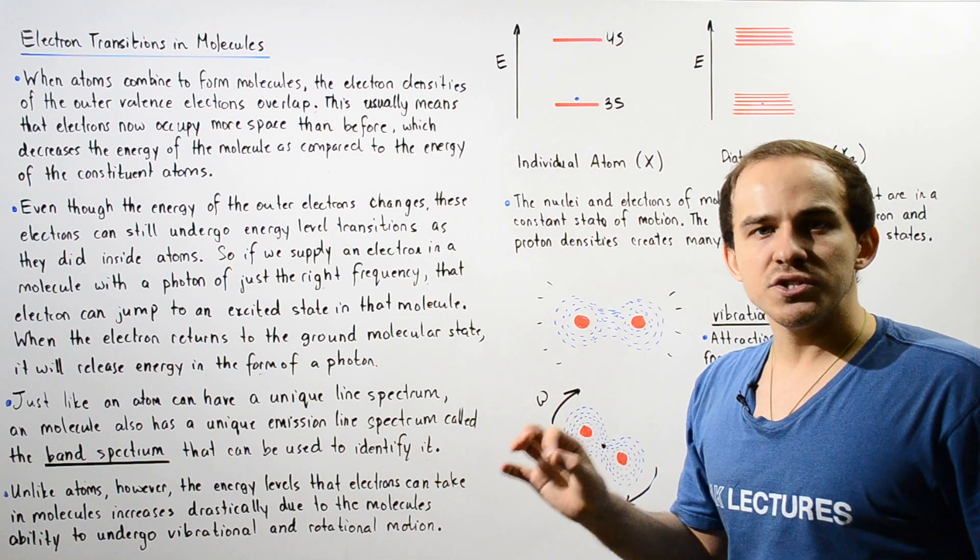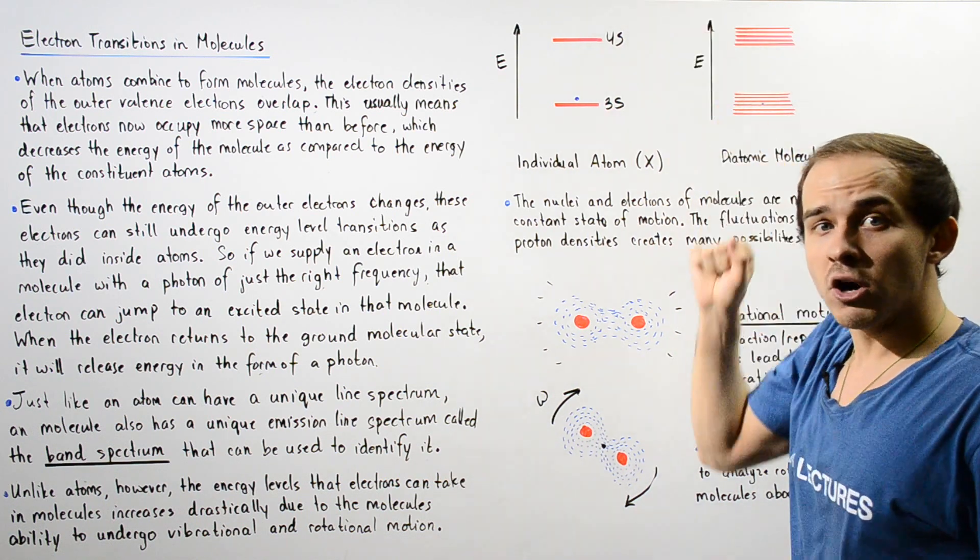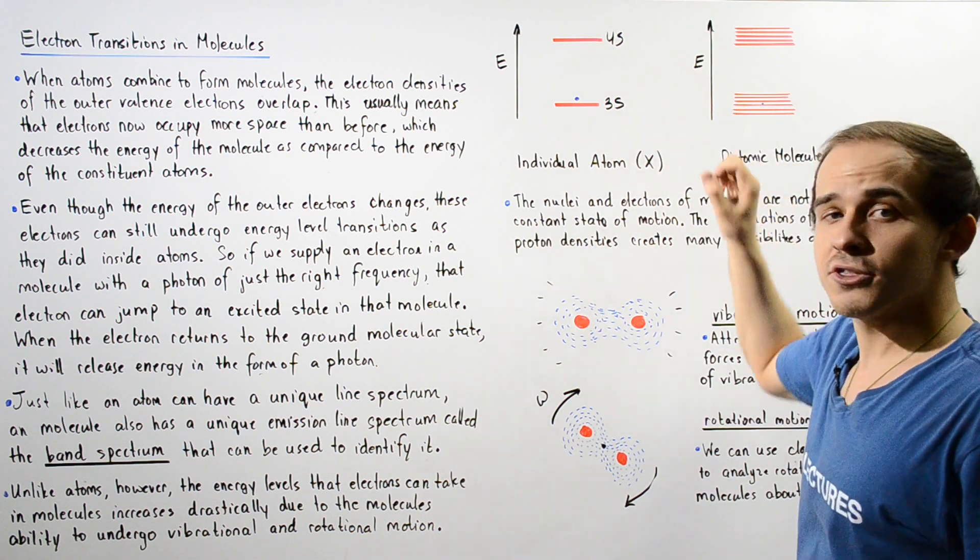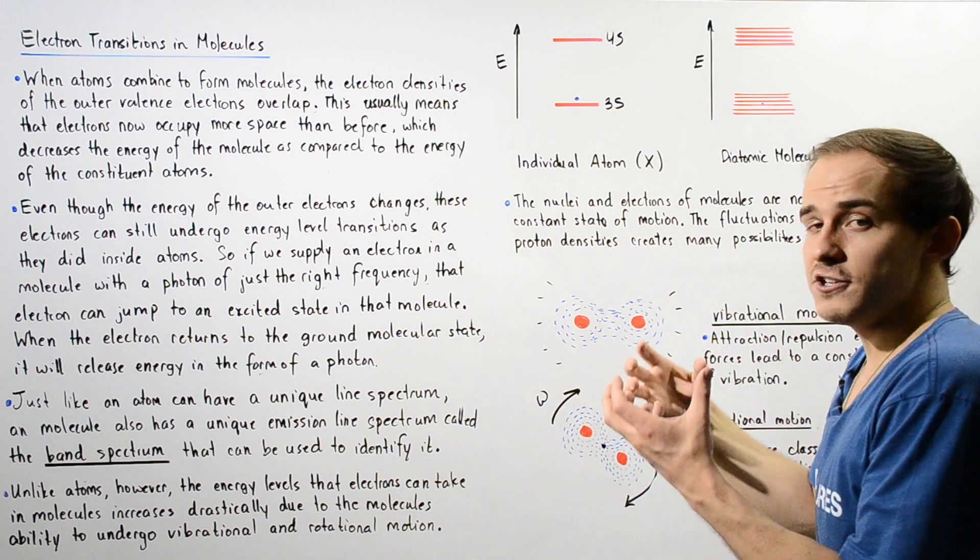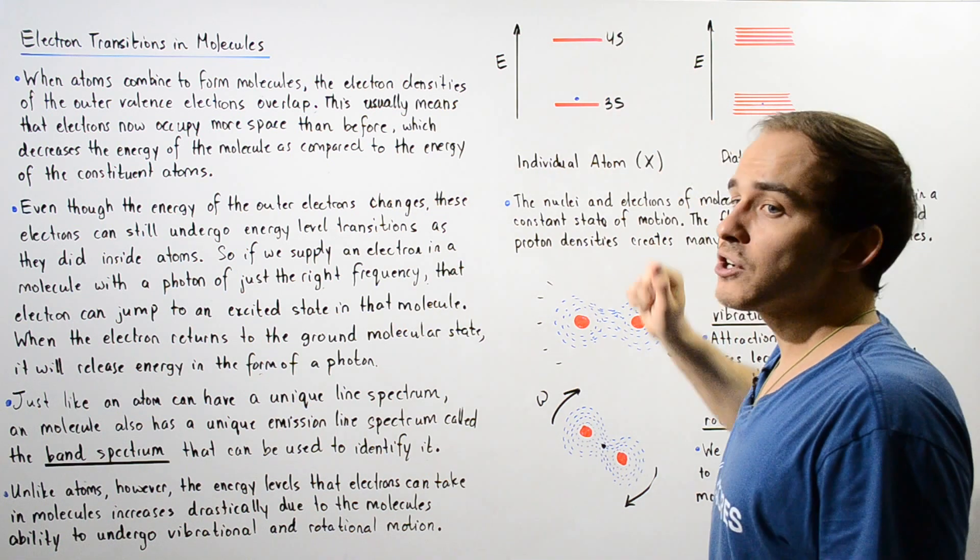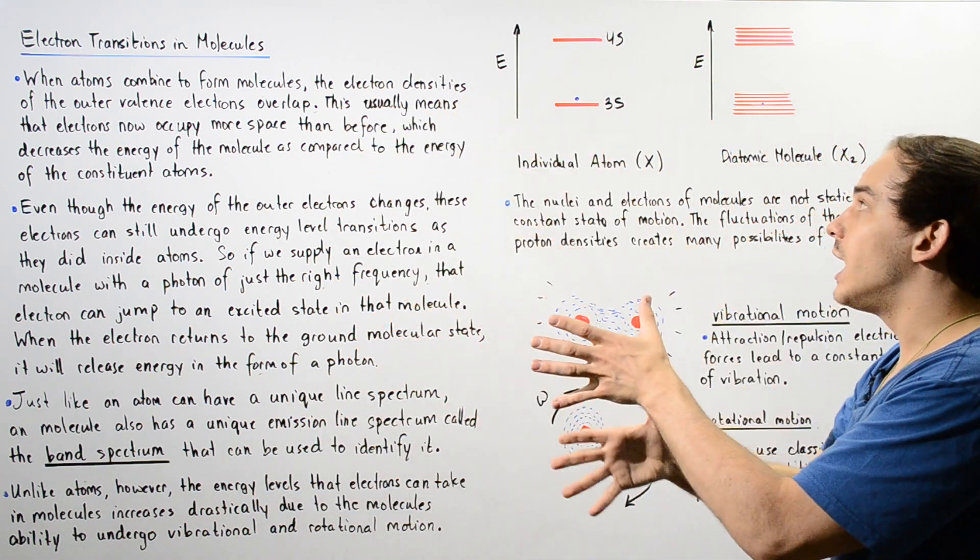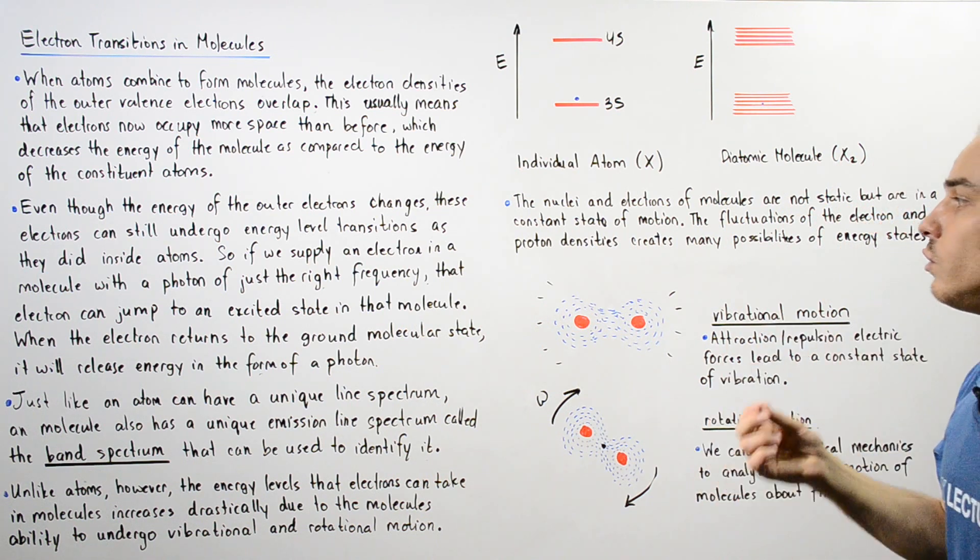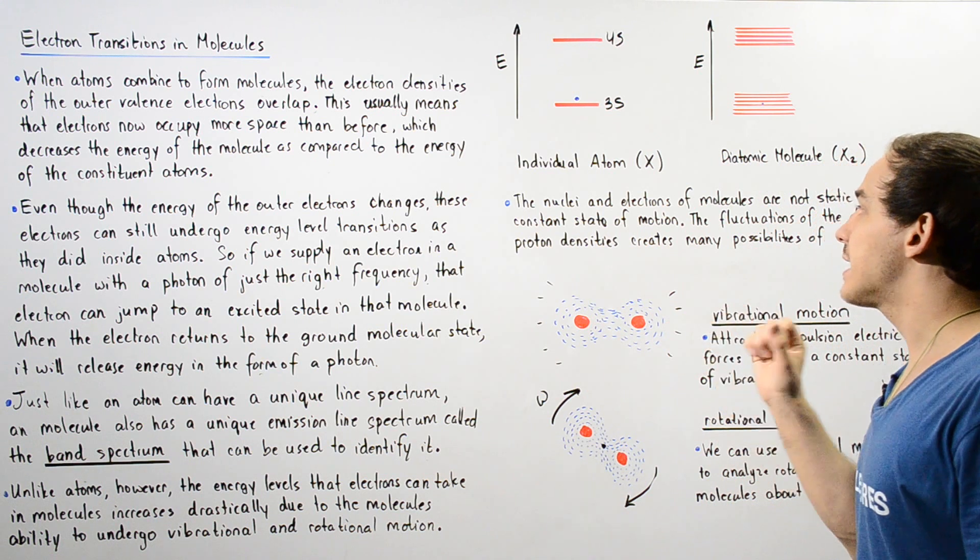Let's suppose our electron transitions from the excited 4S state to our ground 3S state. So we know because we have an individual atom, only one such transition is actually possible. And on our film or on our viewing screen, we're only going to see one line on that line spectrum.